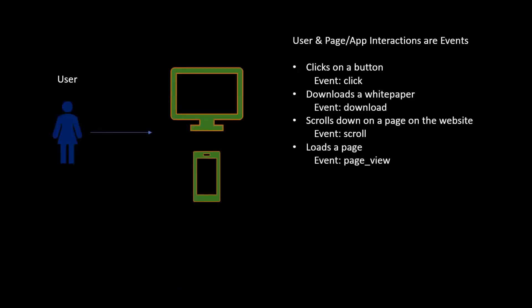Now let's talk about GA4. In GA4, there are two main things: a user and events. A user is the actor — the person who acts. Events are the things the user does, or that happen on the page by default. So a user comes to a site and every activity they do is an event. Clicking a button is an event, scrolling on a page is an event. Everything a user does can be tracked as an event.